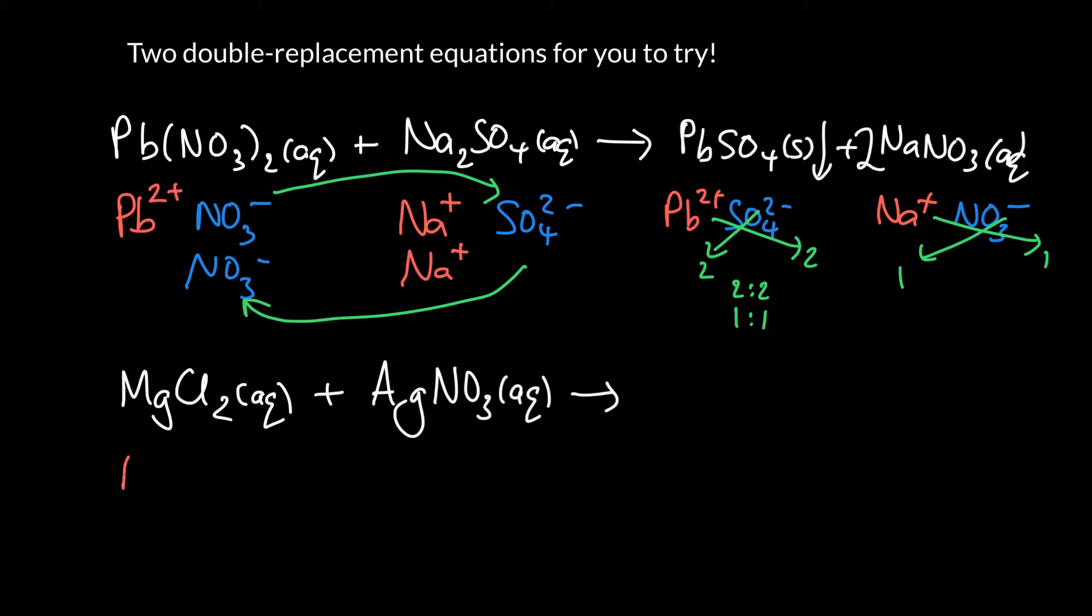All right. So I would recommend you write your cations followed by your anions, some magnesiums in group two. So it's two positive. Silver, we don't know the charge. So we have to figure out the other charge from the counter ion. So let's go back. So chloride, Cl2. What does Cl2 mean? It means that there are two Cl minuses.